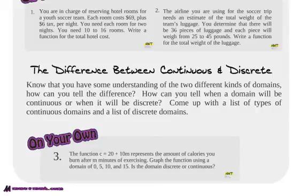Have you figured out the difference between continuous and discrete? Well, looking at these specific examples really helps. Thinking about, can I have .5 of something, or a half of something, or a quarter of something? If you can, then it's most likely going to be continuous. If you can't, like in the hotel room example, it will most likely be discrete.